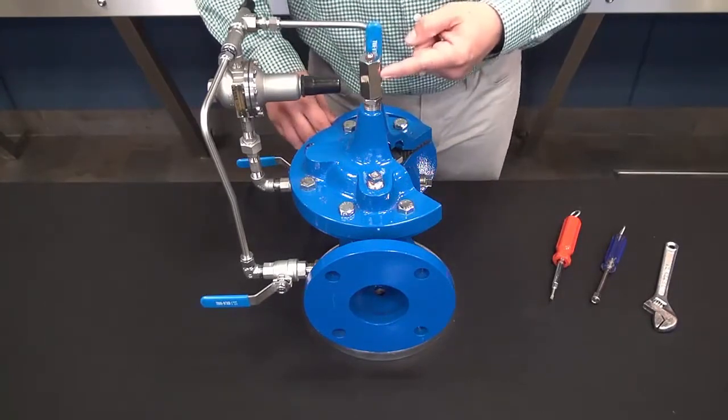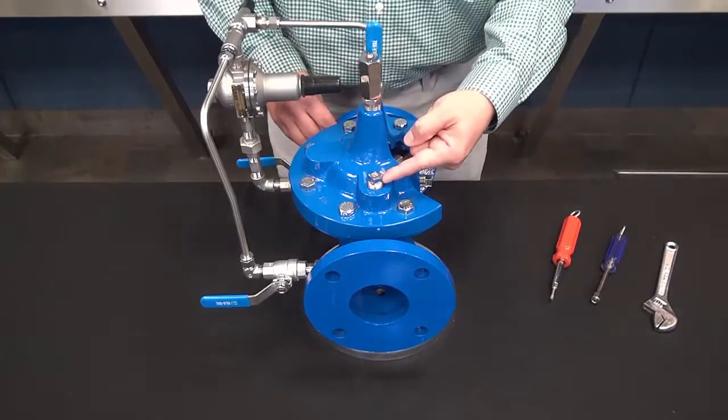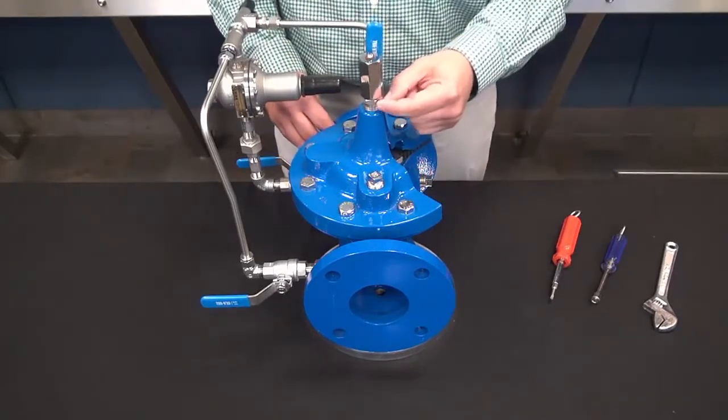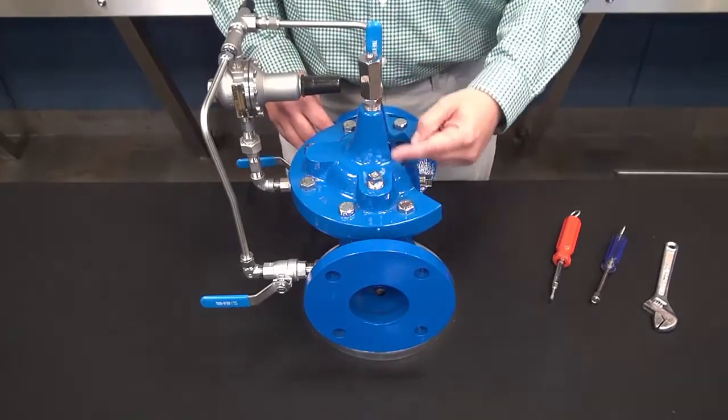If you don't have the position indicator, there will be a body plug similar to this. Loosen that a couple of turns until you have a steady flow of water.